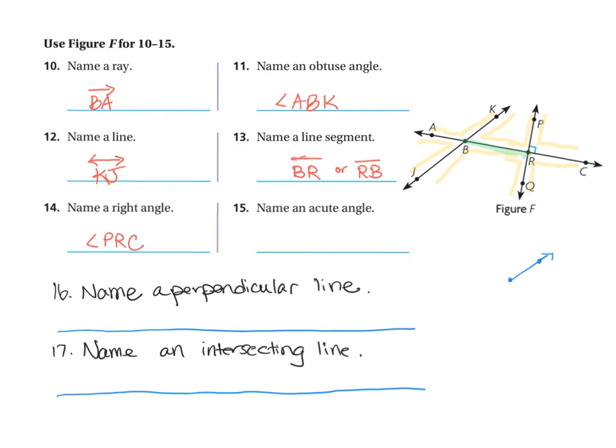The last question asks for an acute angle. We've already identified some of the smaller angles — they're less than a right angle, less than 90 degrees. I have two choices. I'm going to pick angle ABJ.